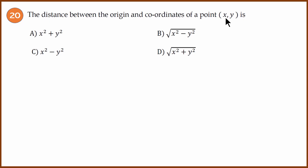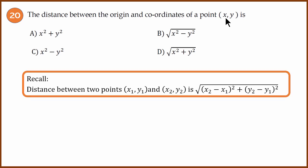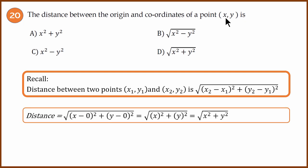Final question: The distance between the origin and coordinates of a point (x, y). The distance formula is given by this formula. In this case one of the points is (x, y), the other point is (0, 0). Simplify to get √(x² + y²). The answer is D.